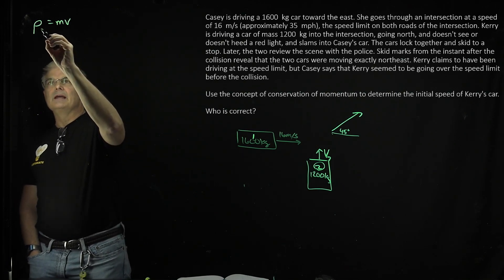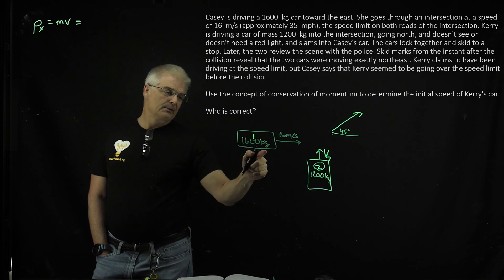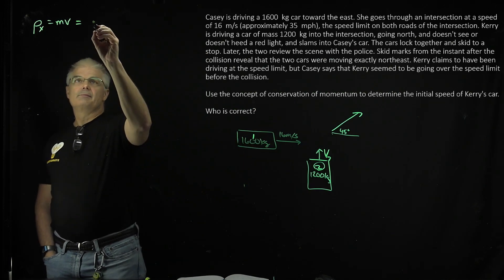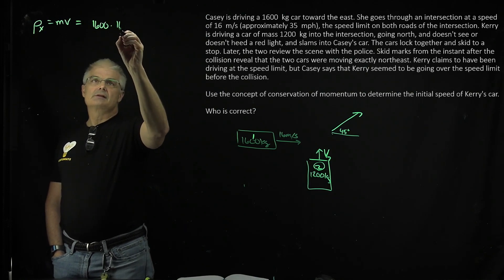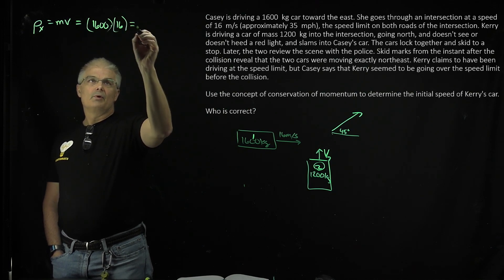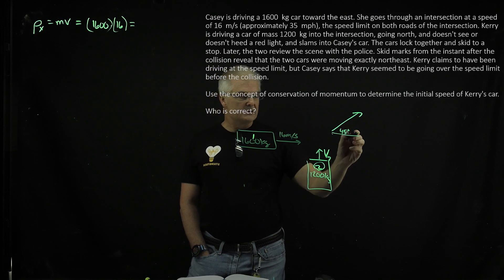But watch how I break this down. Let's talk about the momentum in the X direction. So the momentum in the X direction is only going to be carried out by car one. So that's going to be 1600 times 16, right?